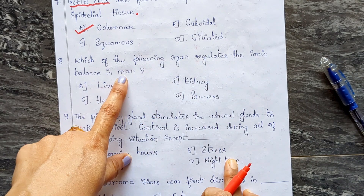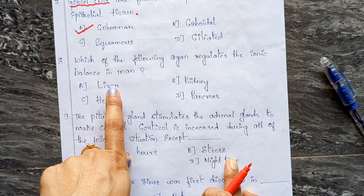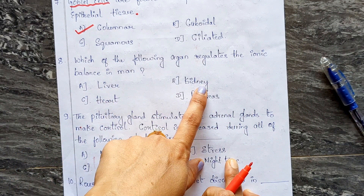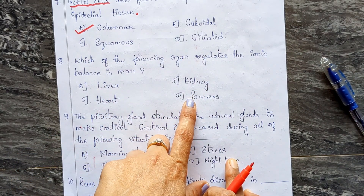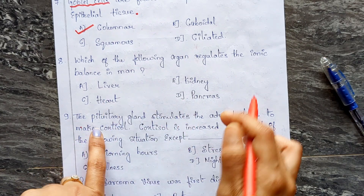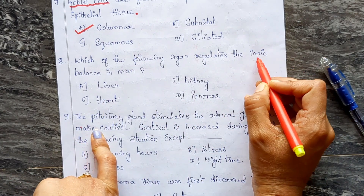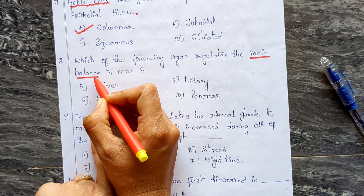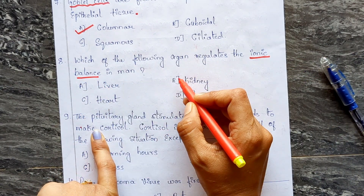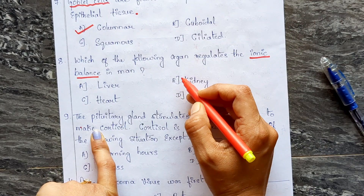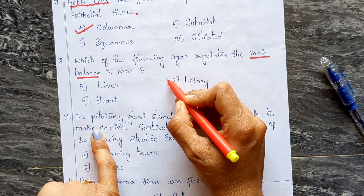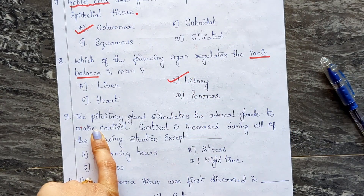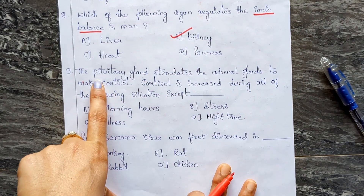Question eight: which organ regulates ionic balance in man? Options: A) liver, B) kidney, C) heart, D) pancreas. Since the question is about ionic balance, the correct answer is B — the kidney.